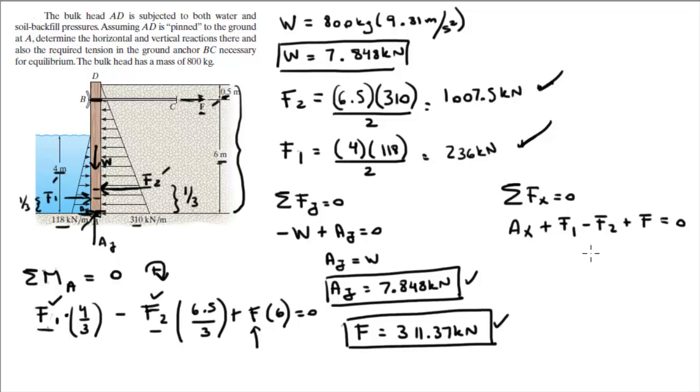So we got AX going to the right, F1 going to the right, F going to the right, and we got F2 going to the left, so F2 is negative. And we got F1, we got F2, we got F, we found them all already. All we need is AX, and we're going to get that AX is equal to